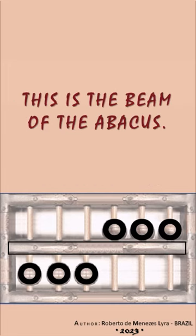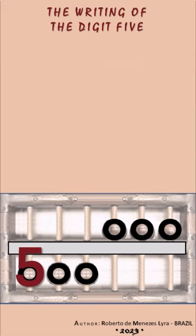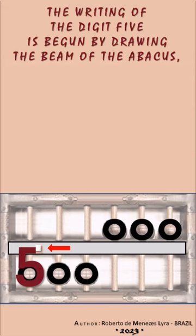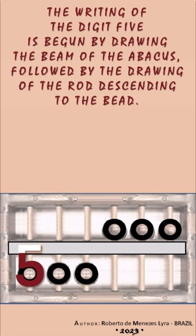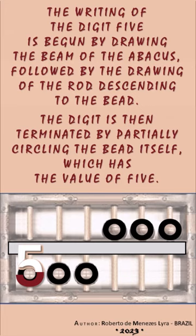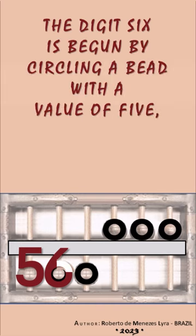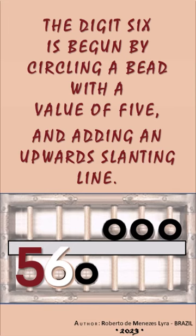This is the beam of the abacus. The writing of the digit 5 is begun by drawing the beam of the abacus, followed by the drawing of the rod descending to the bead. The digit is then terminated by partially circling the bead itself, which has the value of 5. The digit 6 is begun by circling a bead with a value of 5, and adding an upward slanting line.